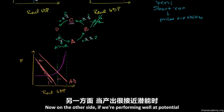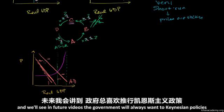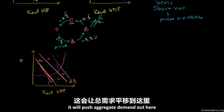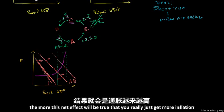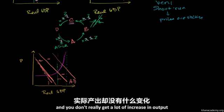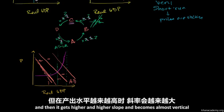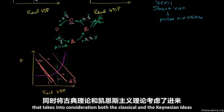Now on the other side, if we're performing well at potential and the government wants to do Keynesian policies anyway — and we'll see in future videos that governments will always want to do Keynesian policies even when not justified — it pushes aggregate demand out here, and the net effect, especially where the curve is more vertical, is that you really just get more inflation and not much increase in output. So it really depends on the circumstance. An aggregate supply curve that starts flat at low levels of output and becomes almost vertical near high levels of output is probably the best model, taking into consideration both classical and Keynesian ideas.